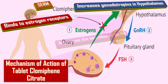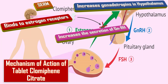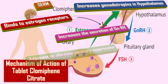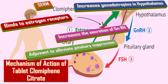It increases the secretion of GnRH as well as FSH hormones, thus increasing the production and serum level of testosterone. It is also used as an adjuvant to alleviate pituitary suppression.